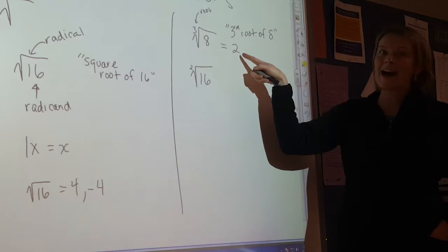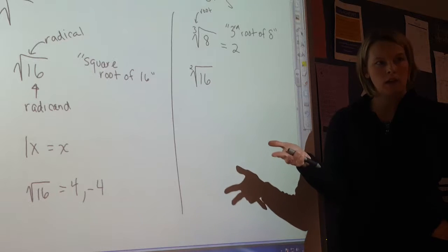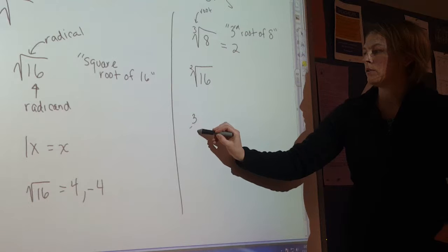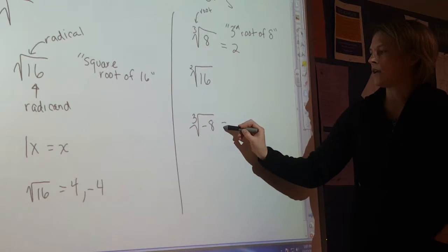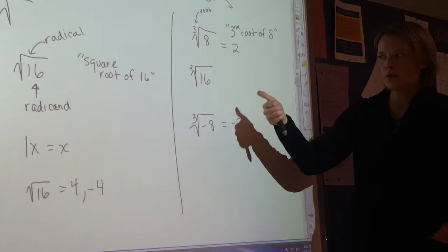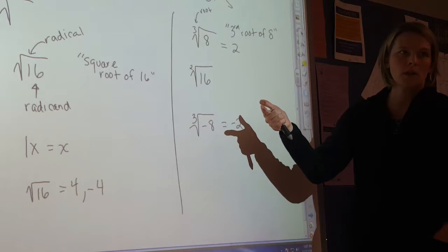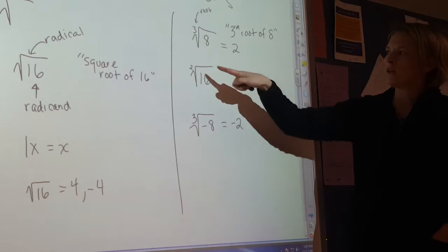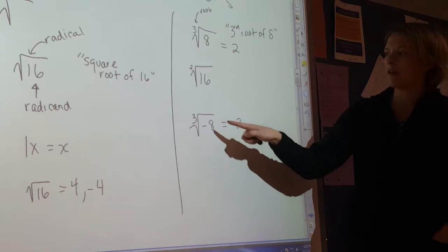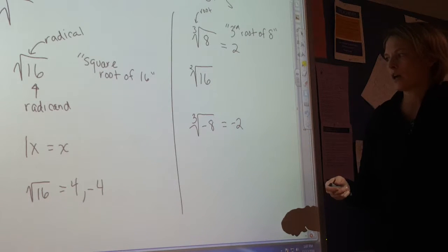This one cannot be negative, because negative 2 times negative 2 is positive 4, times negative 2 is negative 8. So I could take the third root of negative 8 and that equals negative 2. Whereas the square root of 16 could be 4, or negative 4 times negative 4 is positive 16. So when you have an even root, you can have a positive and a negative solution. When you have an odd root, you're either going to have a positive or a negative solution — not both.